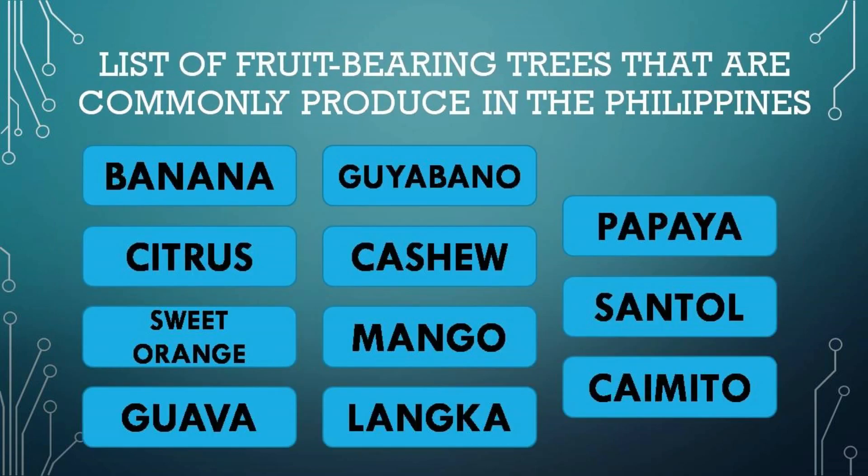List of fruit-bearing trees commonly produced in the Philippines: banana, citrus, sweet orange, guava, guyabano, cashew, mango, langka, papaya, santol, and caimito.